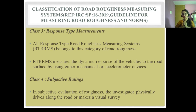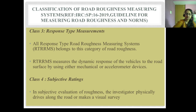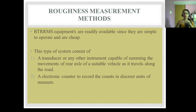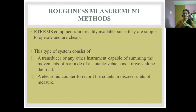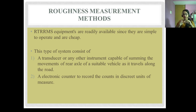Class 4 is subjective ratings, where the investigator physically drives along the road or makes a visual survey. RT-RRMS instruments are readily available, simple to operate, and cheap. The system consists of a transducer or instrument capable of summing the movements of the rear axle of a suitable vehicle as it travels along the road, plus an electronic counter to record counts in discrete units of measure.